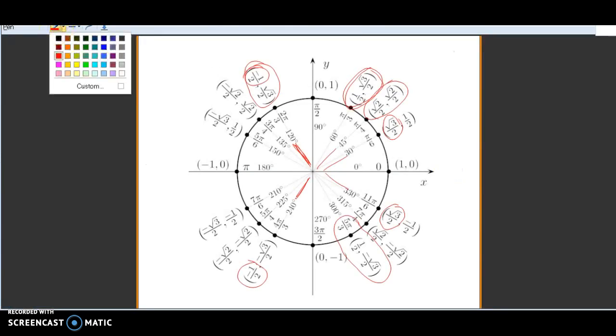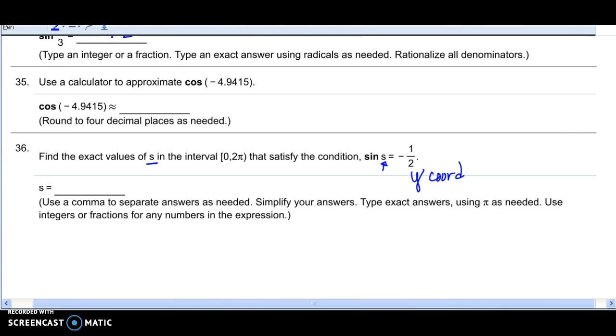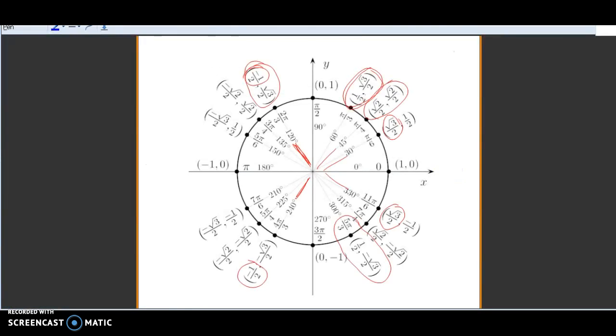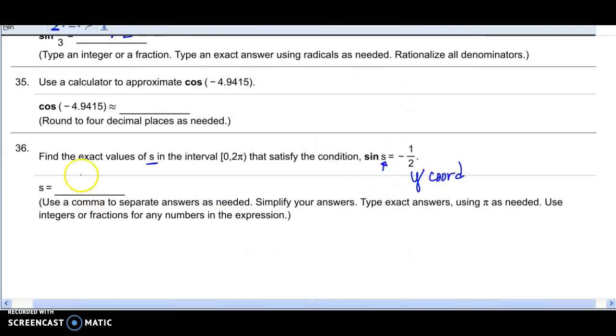So I'm going to go to the unit circle and find all the angles that have a y-coordinate of a negative 1 half. All right, so I'm looking at y-coordinates that are, oh, there's one right there. That y-coordinate is a negative 1 half. And so I need to state those angles in radian measure. So my radian measure would be 7π over 6 and 11π over 6. Quite easily done.